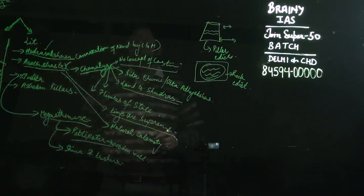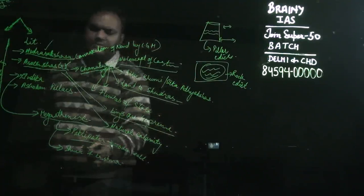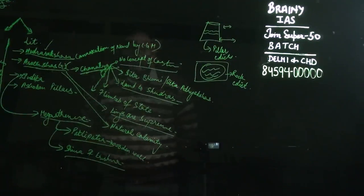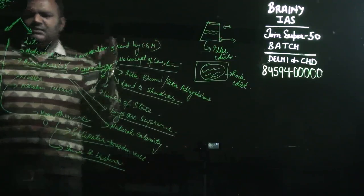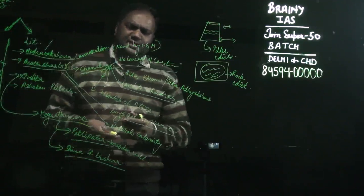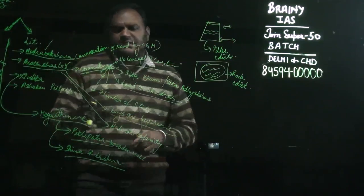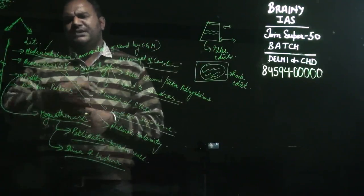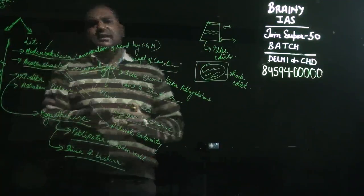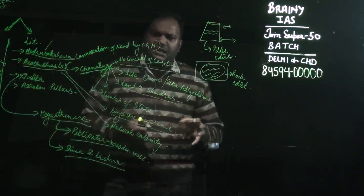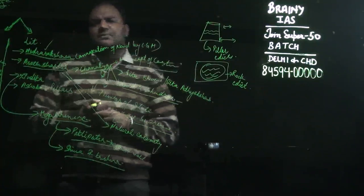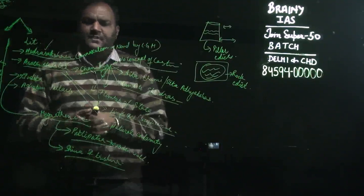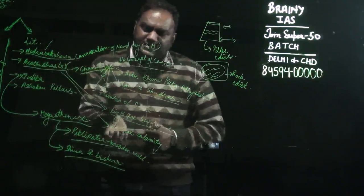The second thing Megasthenes mentions in Indica is the reference to Shiva and Krishna. Third, he mentioned that the Mauryan Empire was so prosperous that there was no concept of famine or starvation, and the people enjoyed a very good standard of living — even common people did not lock their houses.